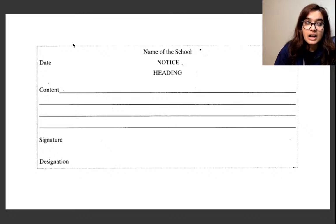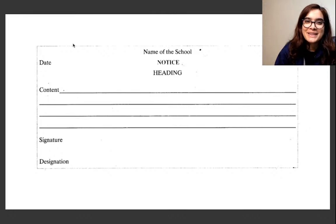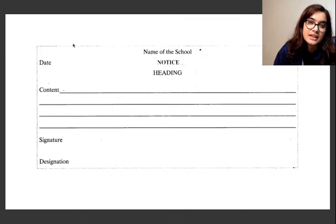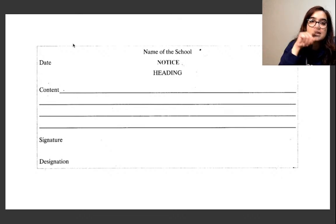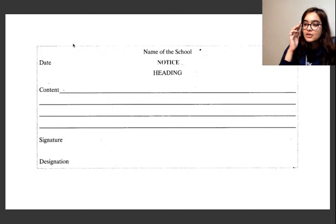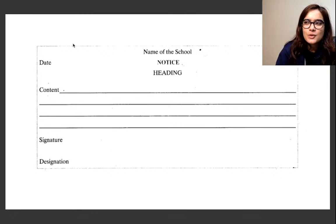The name of the school or organization comes first, then 'Notice' in the middle. After writing 'Notice,' you write the date at the margin. As I told you in yesterday's class, please don't write the date in pure numerical terms or short forms, because the date format differs in American and British English. To avoid confusion, write the full date. After that, write the heading in the middle of the box.